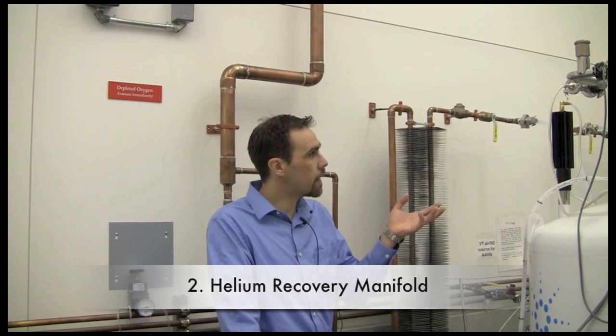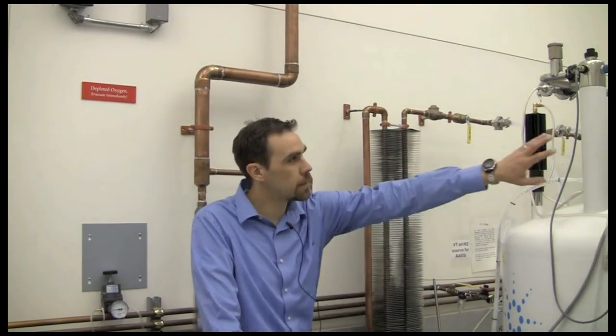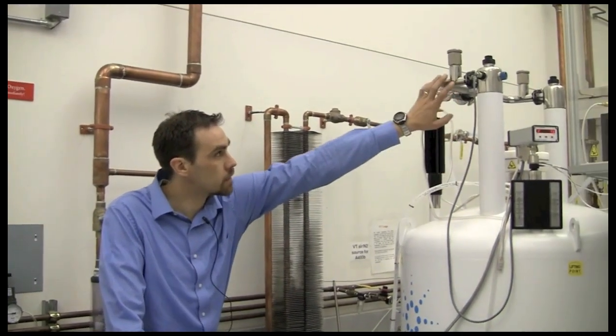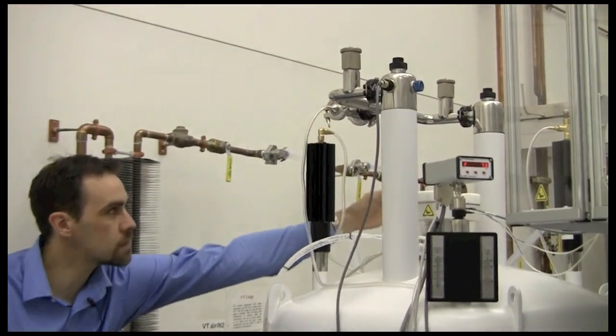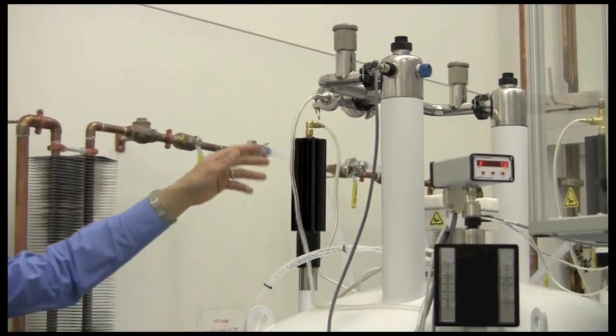Here you can see our helium recovery manifold in more detail. The helium comes out of the NMR magnet on these pipes here, and it comes into this T. One side goes through this large tube, and the other side goes through this small tube.